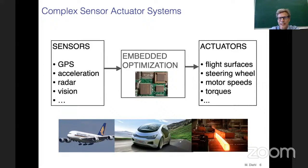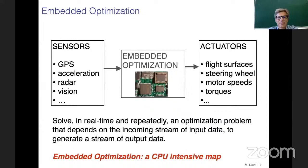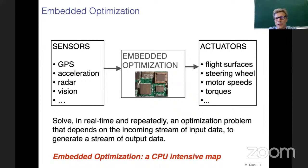Embedded optimization is quite CPU-intensive. It solves in real time, repeatedly, an optimization problem that depends on an incoming stream of data to generate a stream of output data. It's basically optimization methods applied without a human in the loop — you take a lot of data, perform optimization on it, and spit out some other data. In that sense it's just a very CPU-intensive map from input to output.